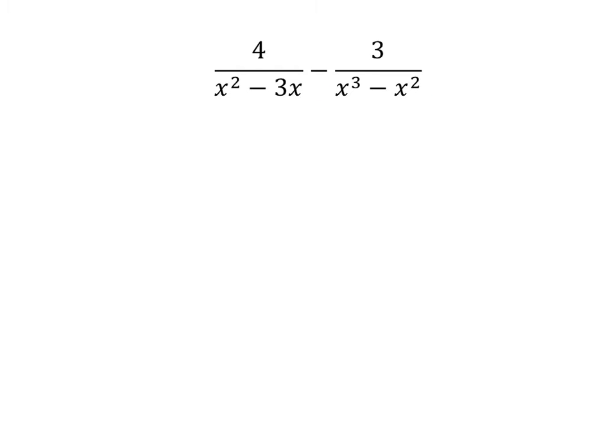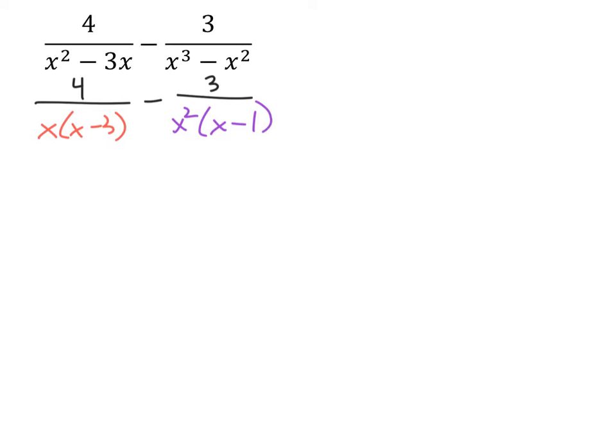So in order to find common denominators, let's go ahead and factor out both of them completely so we know what's missing from each of them. So there we have those factored.